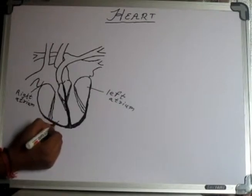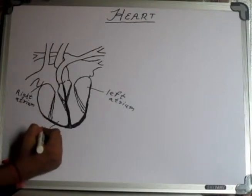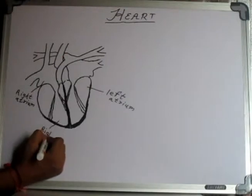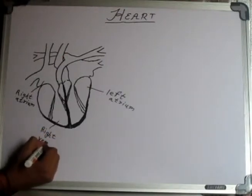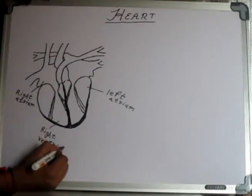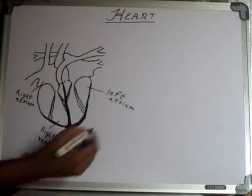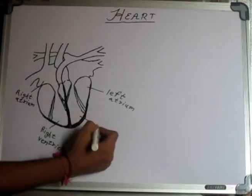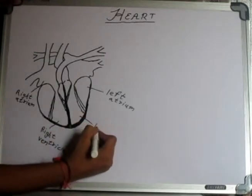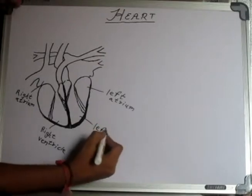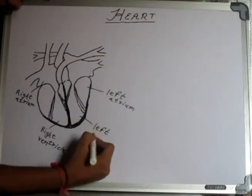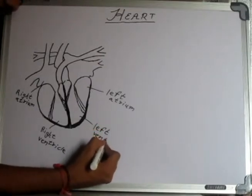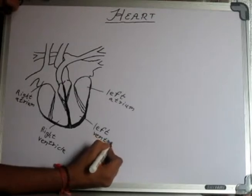This is called the right ventricle. The right lower chamber is called the right ventricle, and the left lower chamber is called the left ventricle. The walls of the ventricles are thick, as they have to pump the blood to all the different parts of the body. And the walls of the atrium are thin.